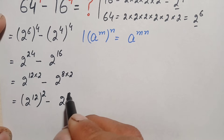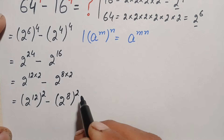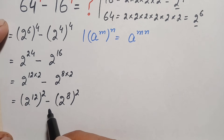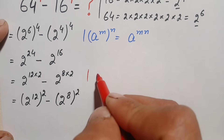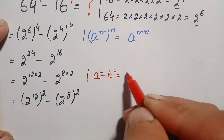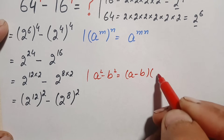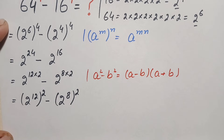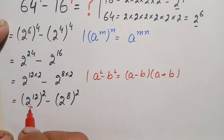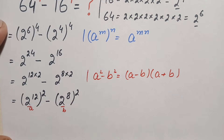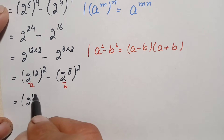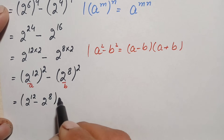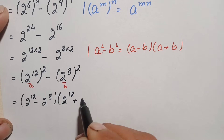Both terms are now in square form — (2^12)² minus (2^8)² — which fits the algebraic identity a squared minus b squared. We use the identity a² - b² = (a - b)(a + b), where a is 2 raised to power 12 and b is 2 raised to power 8. The expression becomes (2^12 - 2^8) times (2^12 + 2^8).